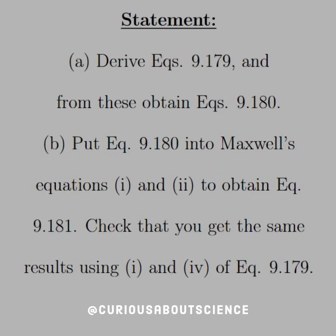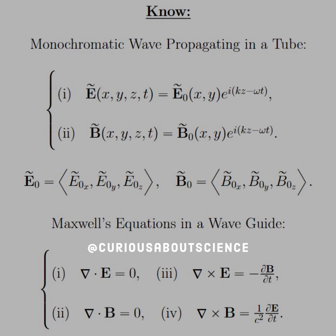Now we have more labor-intensive questions. We're going to derive equation 9.179 and obtain equation 9.180. Then plug 9.180 into Maxwell's equations one and two to obtain equation 9.181, and check that we get the same results using equations one and four of 9.197. Let's start with what these equations are — we want a monochromatic wave propagating in a tube.